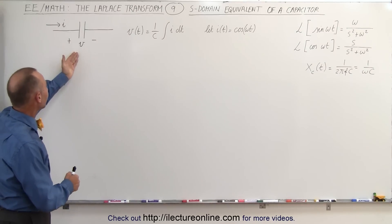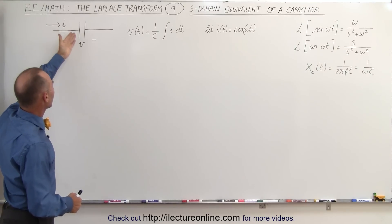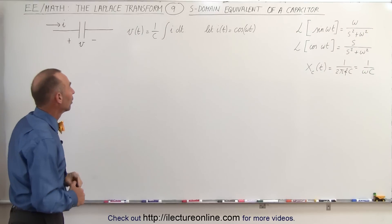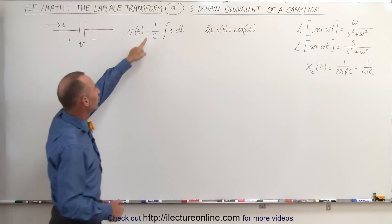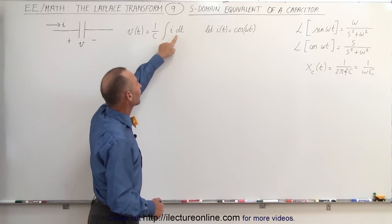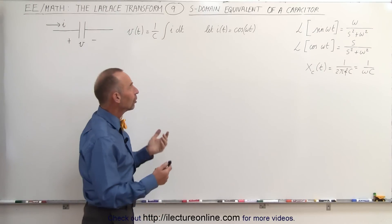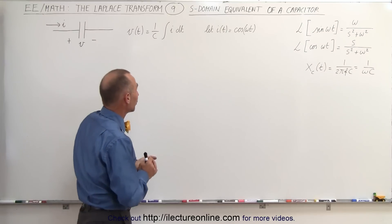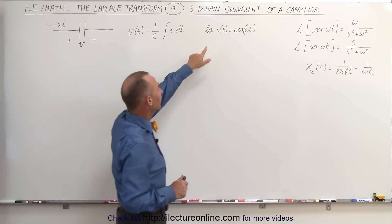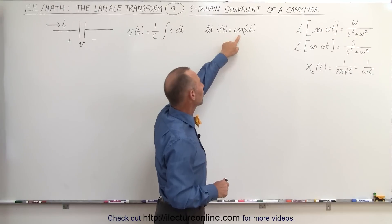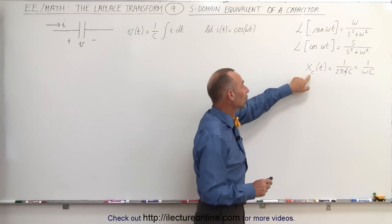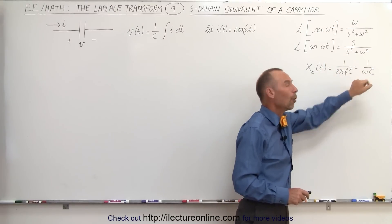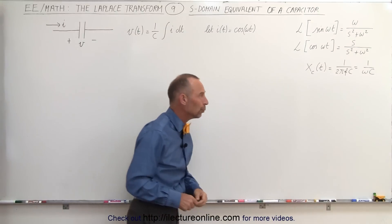We have a capacitor here, with a current flowing towards the capacitor, charge building up on the plates, and that ends up with a voltage difference across the plates. The voltage across the plates will be equal to 1 over the capacitance times the integral of I times dt. Let's call the current towards the capacitor — not through the capacitor, because current doesn't flow through the capacitor, effectively it does — but let's call it equal to the cosine of omega t. Remember that the reactance of a capacitor in the time domain is 1 over 2 pi fc, or 1 over omega C, omega being in radians per second.